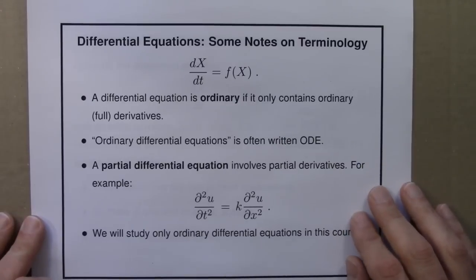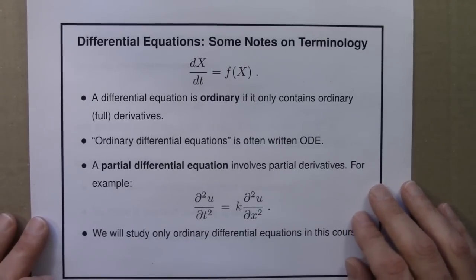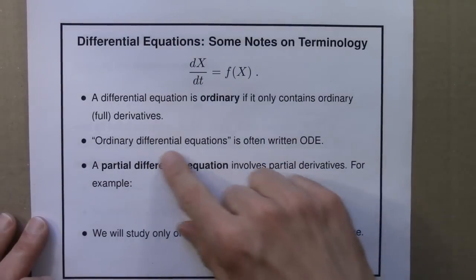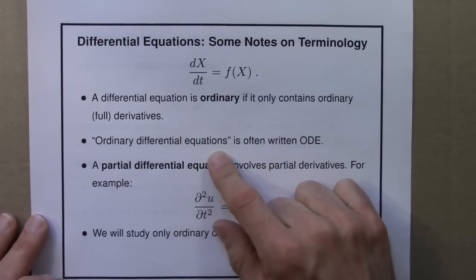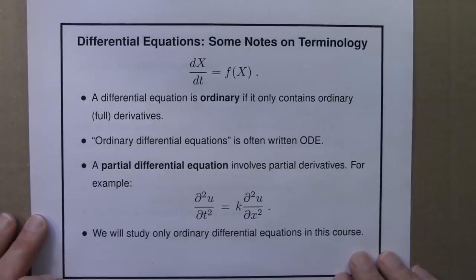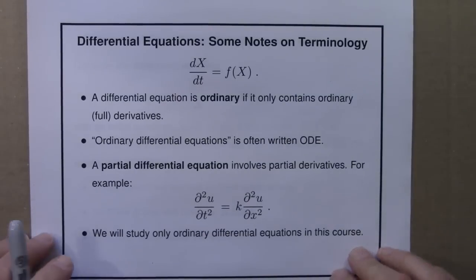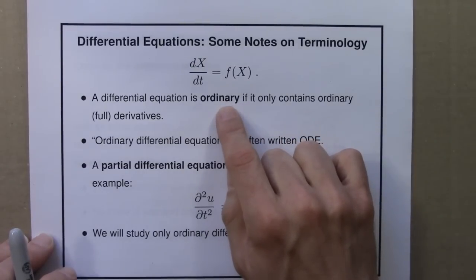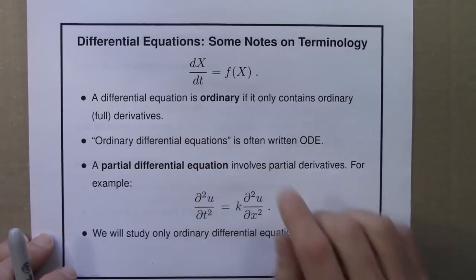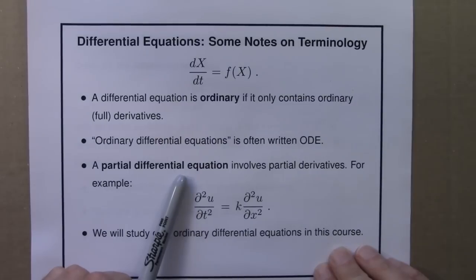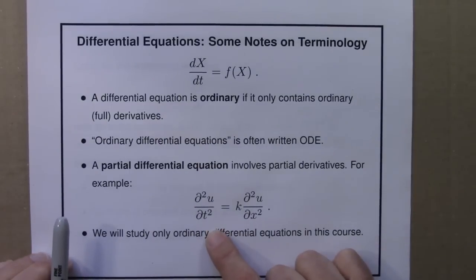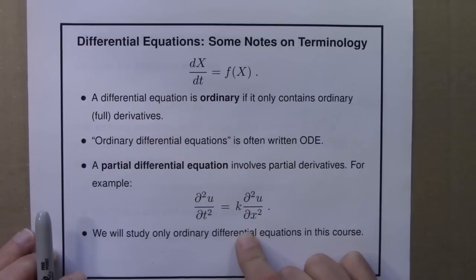A little bit more terminology. A differential equation is called ordinary if it contains only ordinary, i.e. full or total derivatives. So ordinary differential equations, that's what we'll talk about here, is often written ODE. And in contrast, a non-ordinary differential equation is not a peculiar differential equation, but it's called a partial differential equation. And it involves partial derivatives, things like this. This is a version of the wave equation. We won't cover partial differential equations in this course. We'll study only ordinary differential equations.